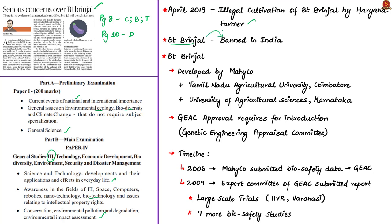To understand what BT Brinjal is about, you can visit our analysis done on 15 June. Today we will focus on the issues and concerns relating to BT Brinjal as discussed by the author. For background, BT Brinjal was developed by Mahyco — the Maharashtra Hybrid Corporation — which is the Indian wing of multinational seed giant Monsanto. Mahyco developed this in association with Tamil Nadu Agricultural University in Coimbatore and the University of Agricultural Sciences in Dharwad, Karnataka.